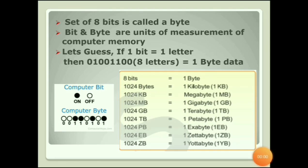Let's understand this with an example. Assume 1 bit is equal to 1 letter. If we write 8 letters, for example 0,1,0,0,0,1,1,0 — those are 8 letters — it will become 1 byte of data.